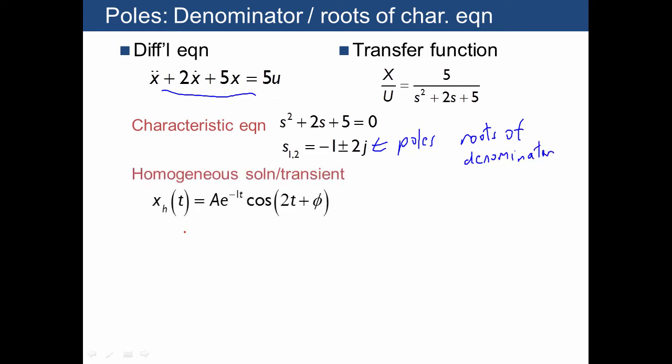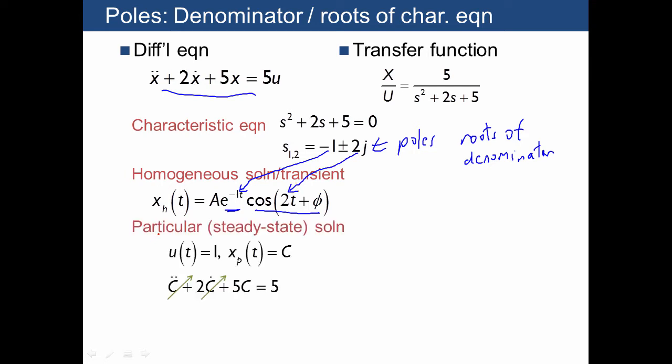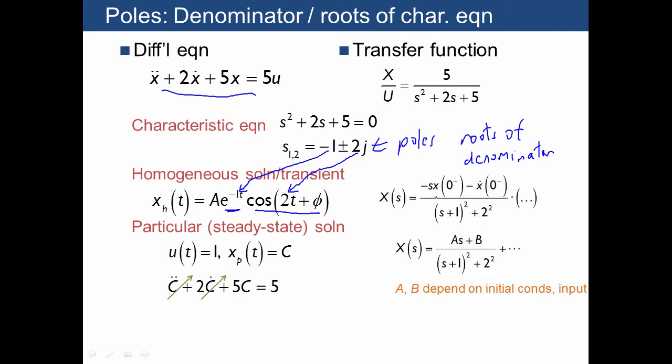Our next step is to find the homogeneous solution, or the transient portion of the solution, which is the form of an exponential that decays with a sinusoid inside, where the decay of the exponential is given here, and the frequency of the sinusoid is given here. Then we find the particular solution, which if we were to apply unit step, we know the particular solution would be a constant, and we can easily solve for what that value is. Alternatively, we could just use the Laplace transform with initial conditions, and you know how to do that. After that, you'd have to find the partial fraction expansion, and then you'll have some constants a and b that depend on the initial conditions and on the particular kind of input.